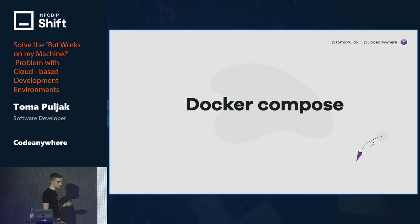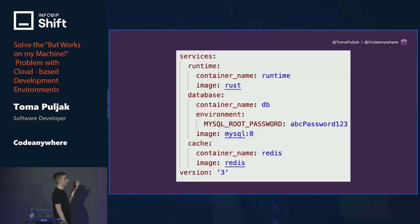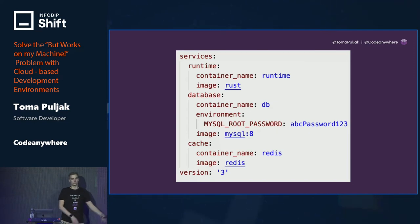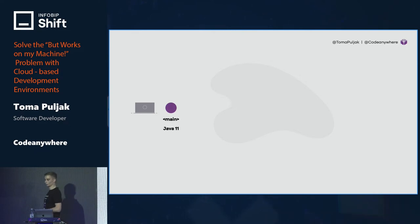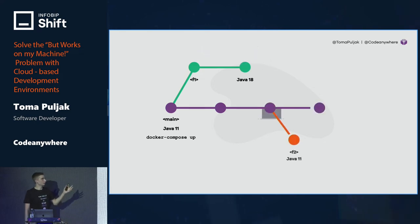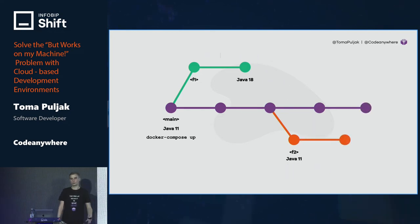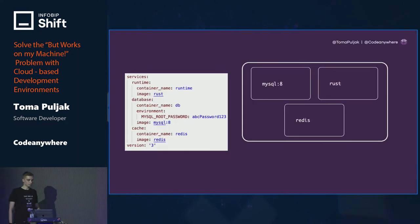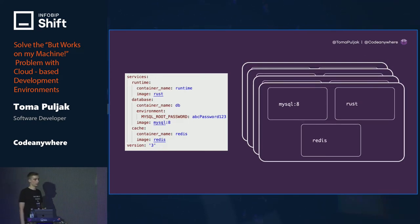This is where Docker Compose comes into play. Docker Compose is great for bringing infrastructure as code concepts into development environments. A Docker Compose file lifts all the services needed for your project — for example, Rust, MySQL, and Redis. When we have a project with Docker Compose, we just run Docker Compose up and we should be good to go on any machine. Applying this to our Java example, we just run Docker Compose up when switching between Java 11 and Java 18 branches. This is already a step forward — IAC allows you to truly create ephemeral development environments tailored to your project.